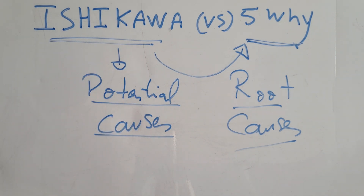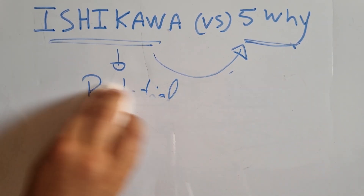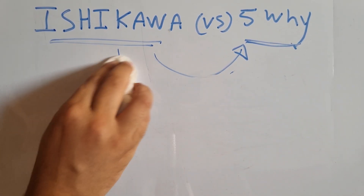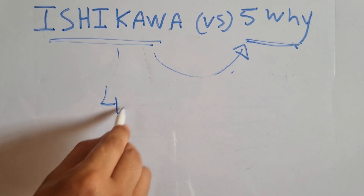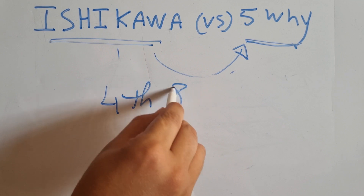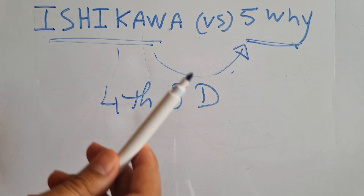So the first difference between both tools is: we use Ishikawa to find out the potential causes and the 5 Whys to find out the root cause. The word 'potential' means it could be the root cause or it cannot be the root cause. For this reason, we make the Ishikawa first. When we use these two tools, in general we are using them in the fourth step of the A8D problem solving.